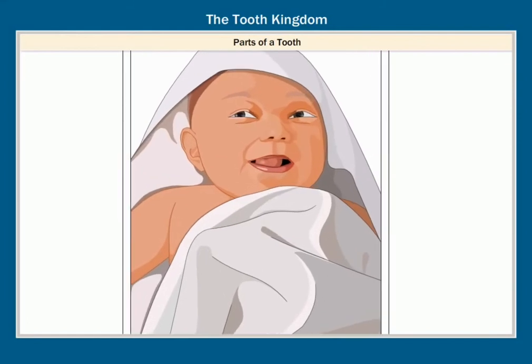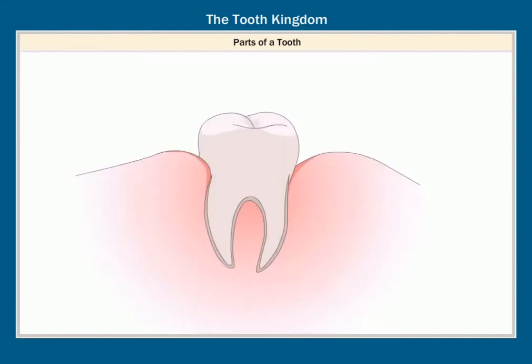Let's observe the different parts of a tooth. Teeth grow out of the jawbones, which are covered by pink colored gums. The visible part of the tooth that grows and comes out of the gums is called the crown.